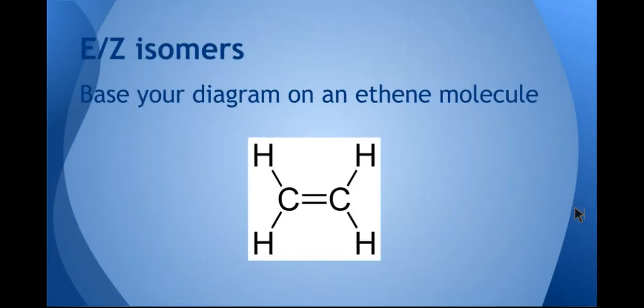E/Z isomers: always try and base your diagram on an ethene molecule. Then the examiner can see very clearly if your groups that you're comparing are on the same side of the double bond or opposite sides of the double bond.